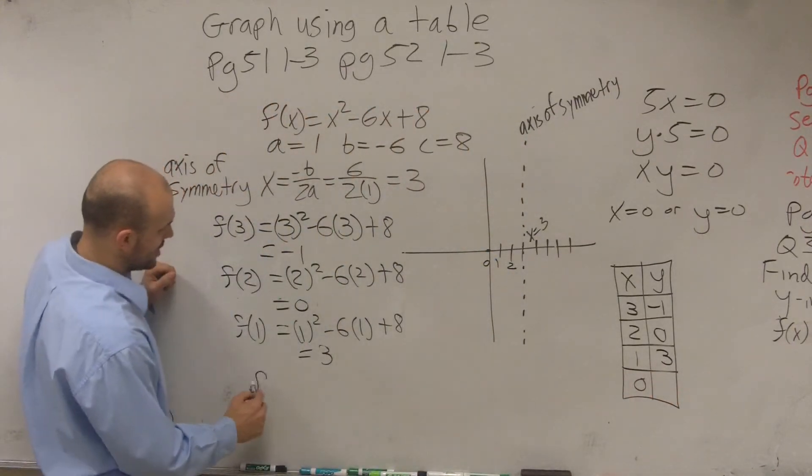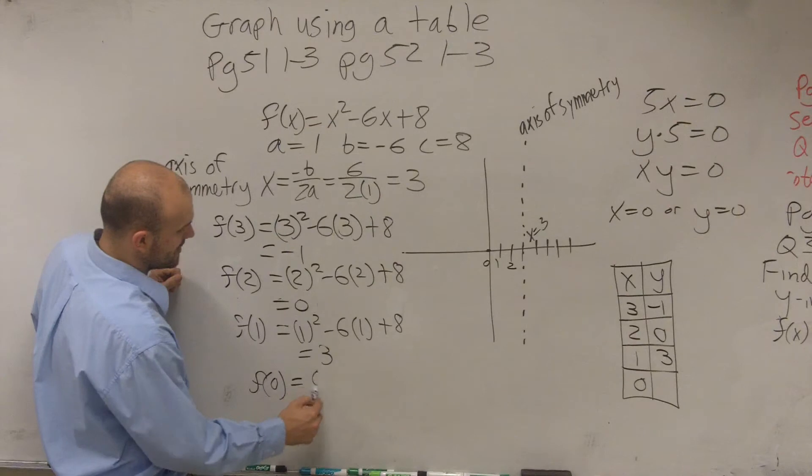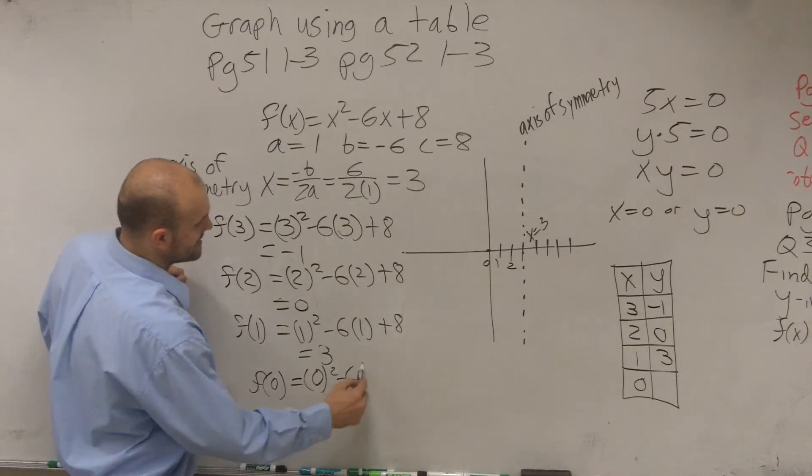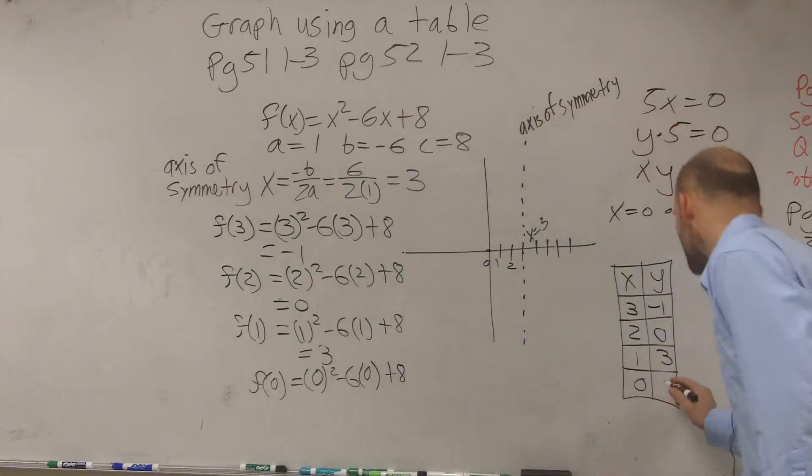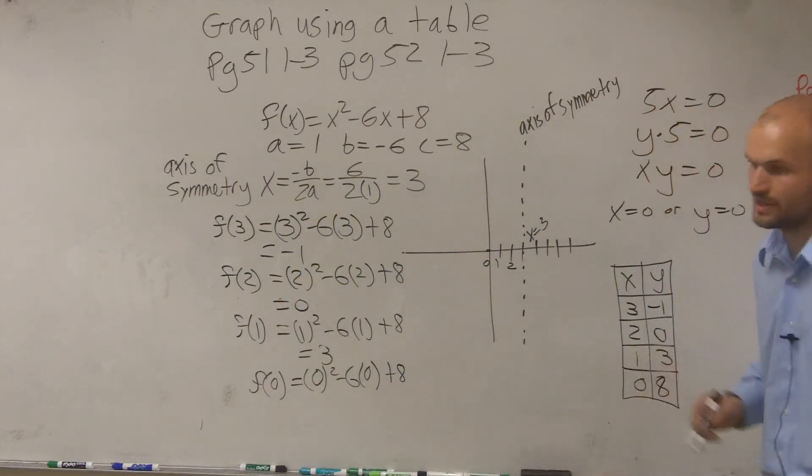Then, lastly, we do 0. So f of 0 equals 0 squared minus 6 times 0 plus 8. And that function is going to be now 8, because that equals 8.